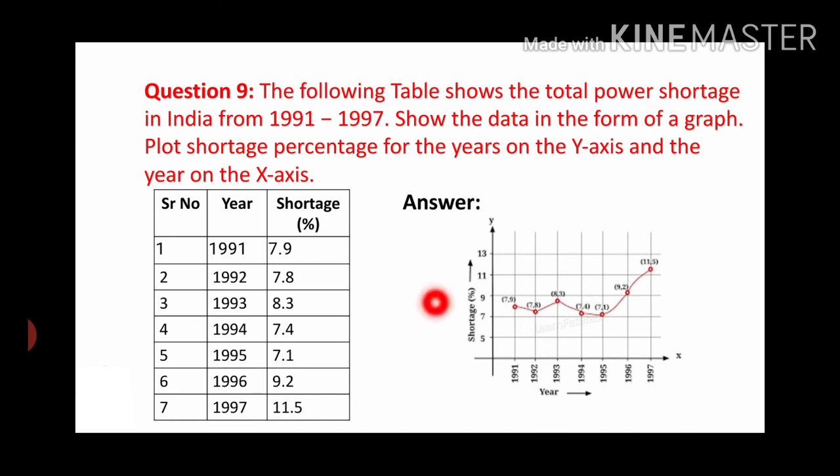Let's see the answer. The table shows total shortage - for example, 1991 was 7.9 percent. Years start from 1991 to 1997. In the graph, from 1991 to 1997, there are bars. If you look at the percentage range, it is almost 7 to 12, so it has the range accordingly. You can even change this range, like 5, 6, 7 - you can have a difference of just 1% as well. For example, in 1991, it was 7.9%, so 7.9% is marked here. In 1992, it was 7.8%, represented here. In 1993, it was 8.3%, indicated here. Likewise, all years are represented, and each shortage is shown on the graph.